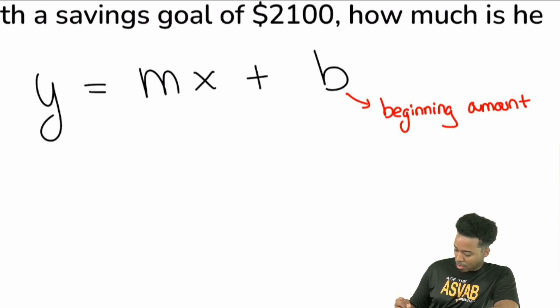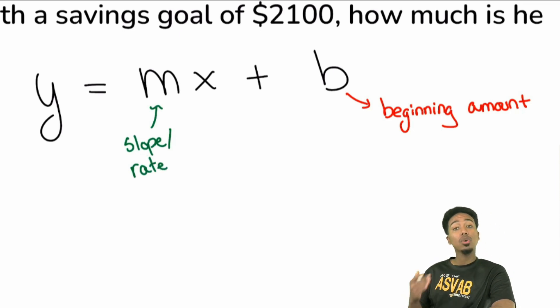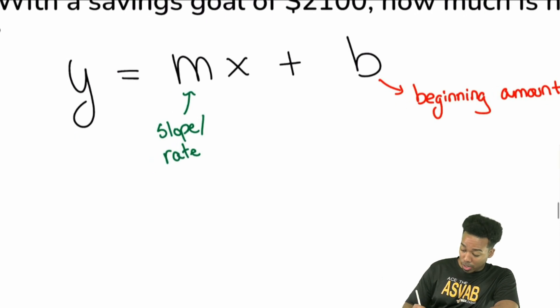The m represents the slope, and this is also going to be called your rate. And then the x and the y are connected. The x and the y basically is, the x is your input, your y is your output. That sounds really boring. So the other way you can say it is, hey, y is the result.